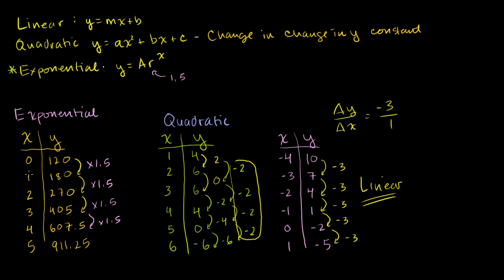When we increased x from 0 to 1, we increased y by a factor of 1.5. We multiplied 1.5 times 120 to get 180. When we increased x by 1 again, once again, y increased by a factor of 1.5. We multiplied 1.5 times 180.